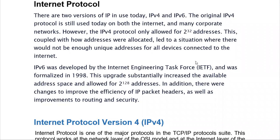The Internet Protocol has two versions in use today: IPv4 and IPv6. The original IPv4 protocol is still used today on both the internet and many corporate networks. However, IPv4 only allowed 2 to the power 32 addresses, and this coupled with how addresses were allocated led to a situation where there would not be enough unique addresses for all devices connected to the internet.